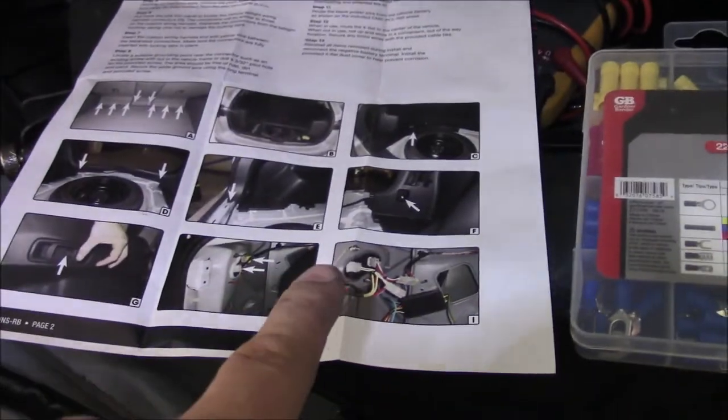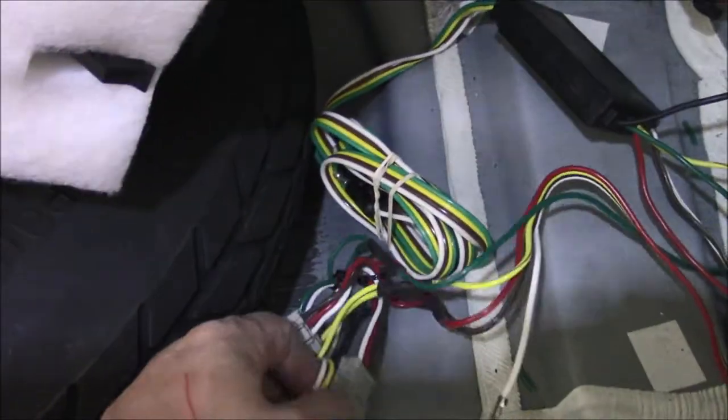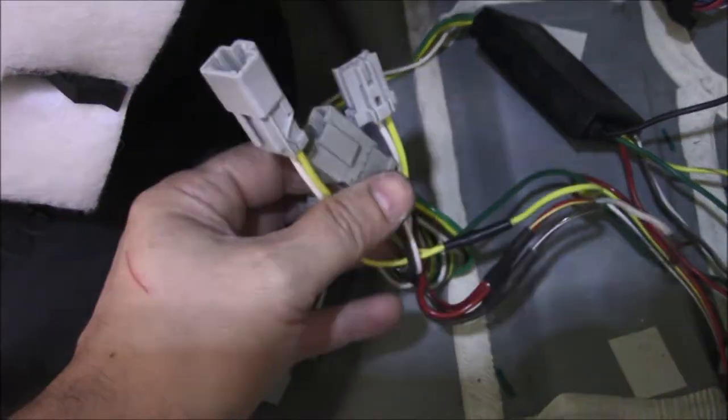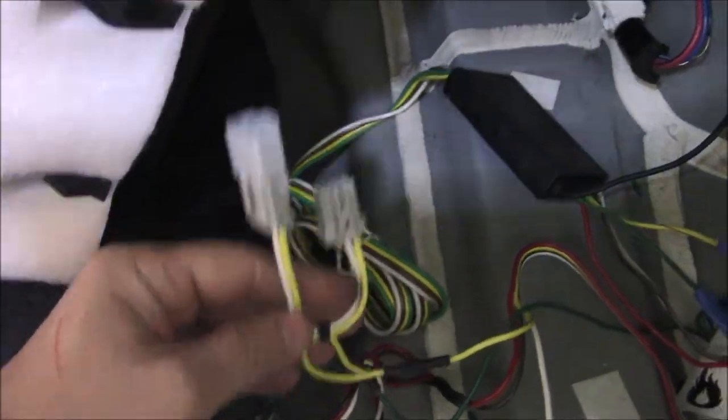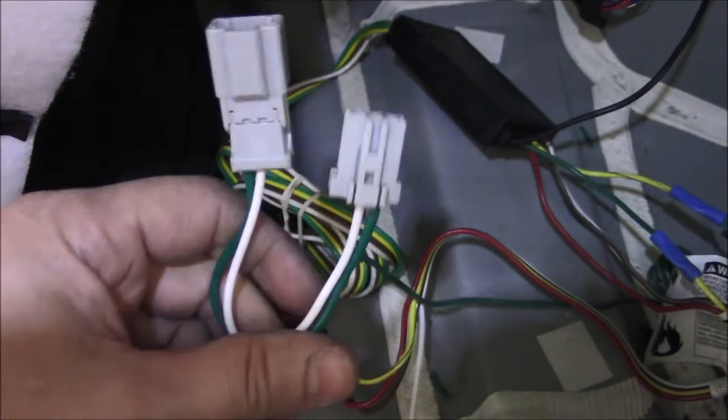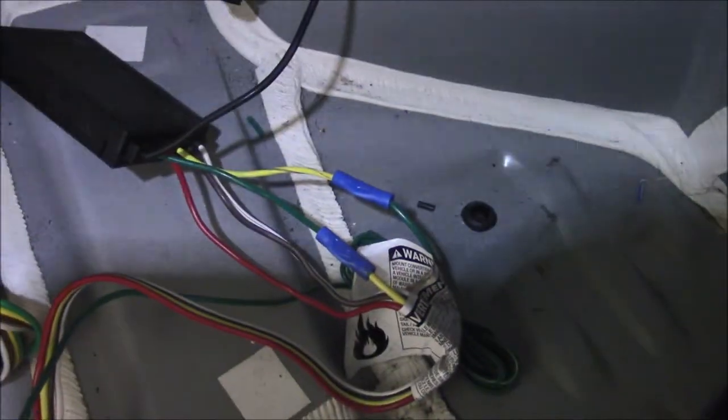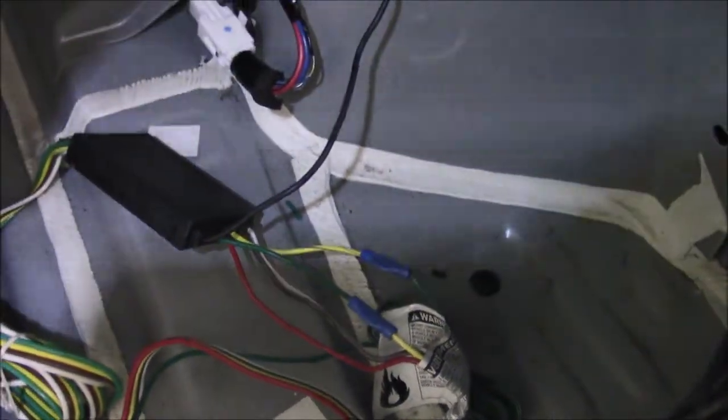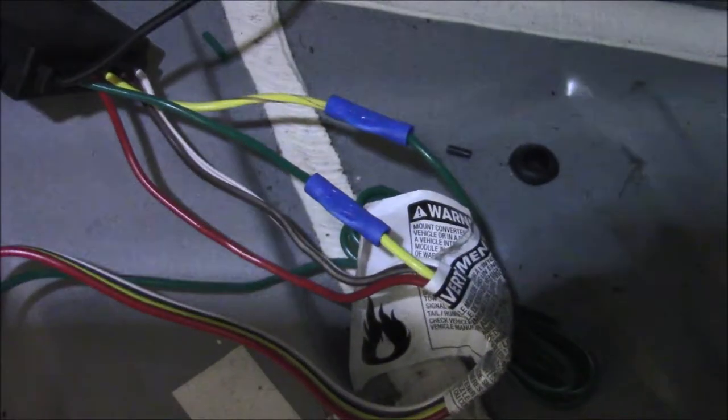So you're like, wait a minute. You can't do that because the instructions clearly state that this black box has to be mounted on the driver's side because you've got driver's side turn signals and passenger side turn signals. Well, all you do is reverse the input. The wires don't care. The circuit doesn't care what color is what.